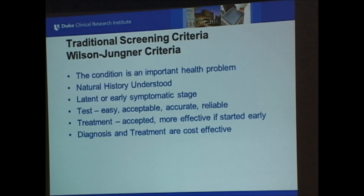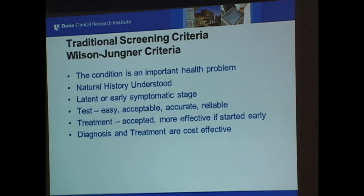The natural history has to be understood to some degree to understand what the benefit of identification and treatment is. There needs to be a latent or early symptomatic stage where you could hopefully identify the condition. There should be a test that's easy, acceptable, accurate, and reliable. There should be a treatment that's accepted, and more effective if started early. Diagnosis and treatment should be cost-effective relative to other services that we provide.